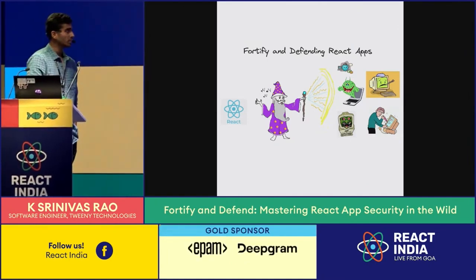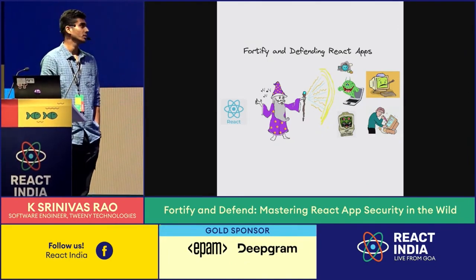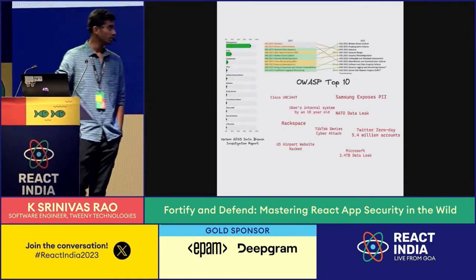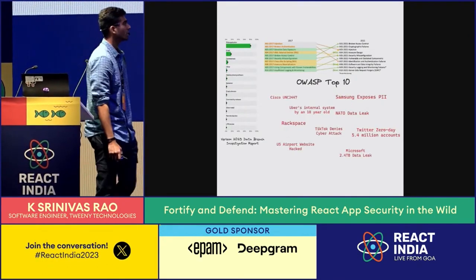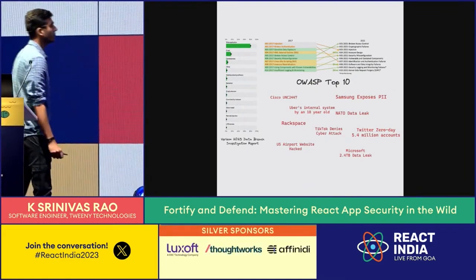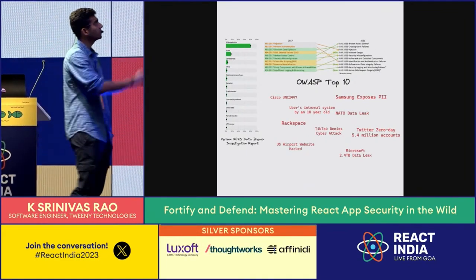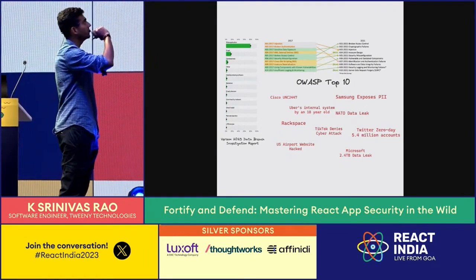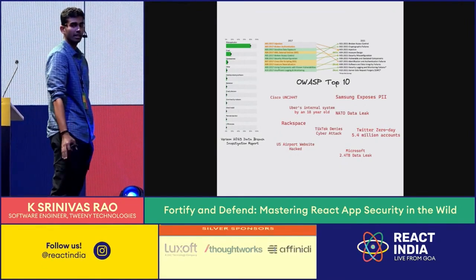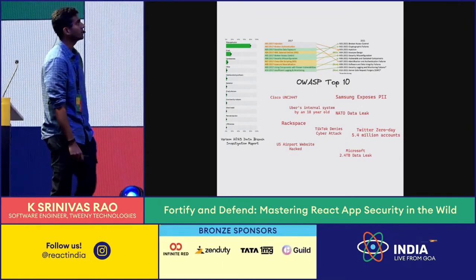Let's take a look at the bigger picture of web security to understand what we are up against. The first chart here is from the Verizon 2023 data breach report. Web applications are right at the top of the list, which is a clear sign that our field is the prime target for cyber attacks.